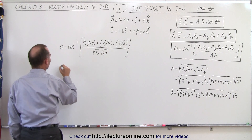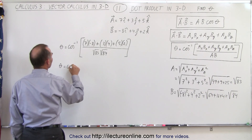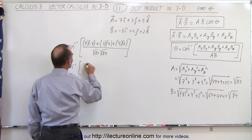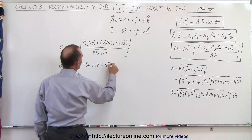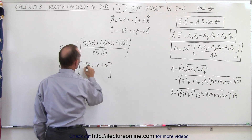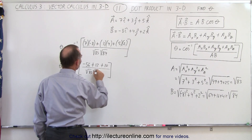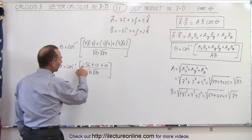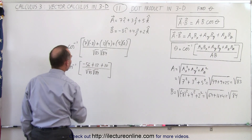Simplifying, theta equals the inverse cosine of: that's negative 56 plus 12 plus 10 in the numerator, all divided by the square root of 83 times the square root of 84. So negative 56 plus 12 is negative 44, plus 10 gives negative 34.